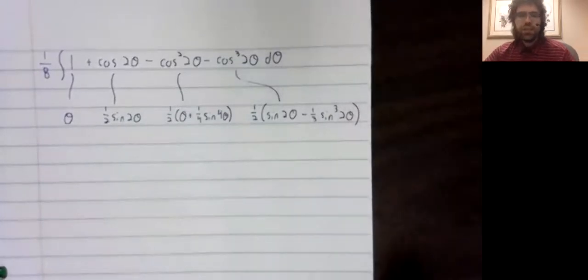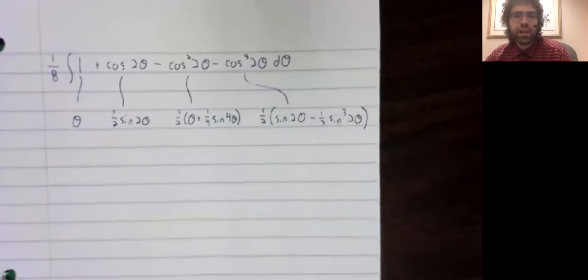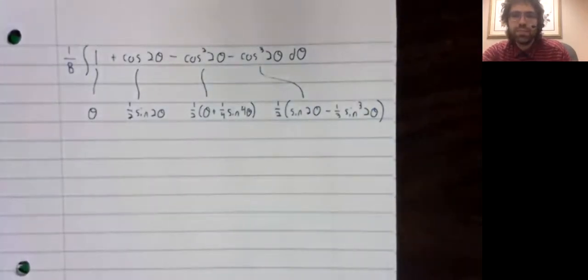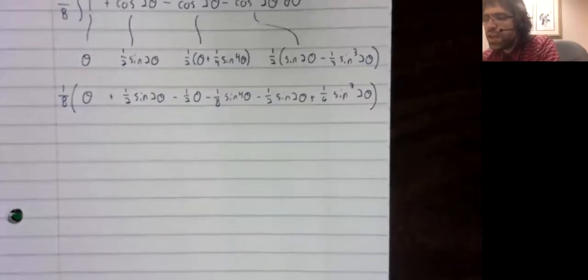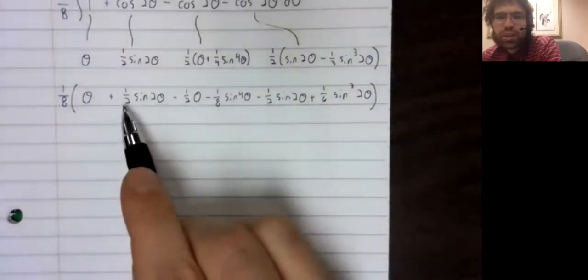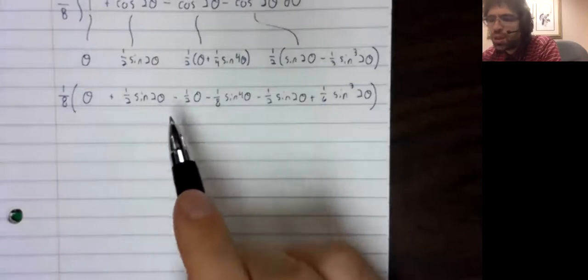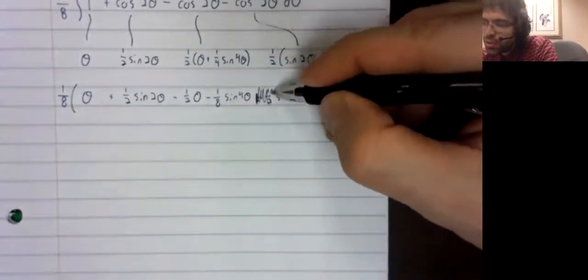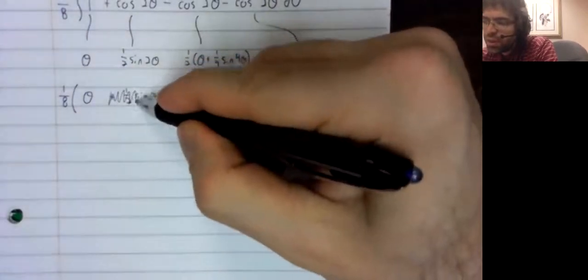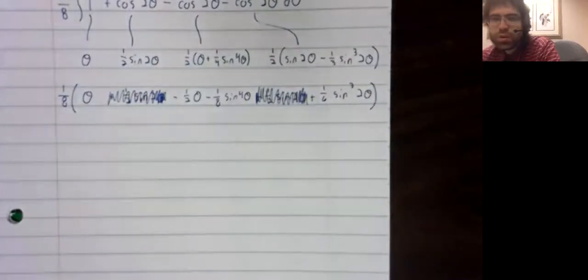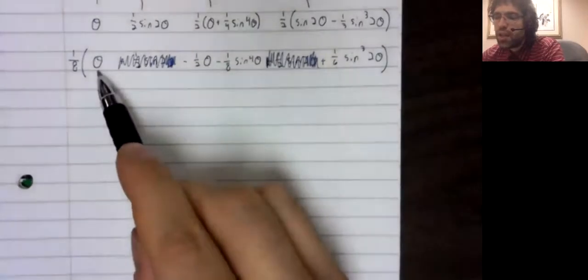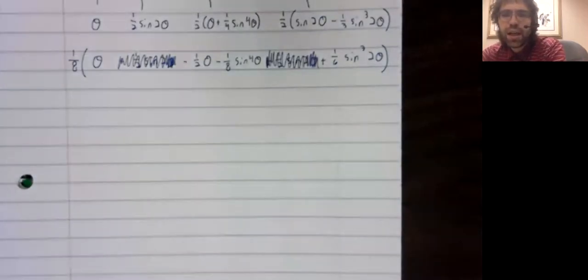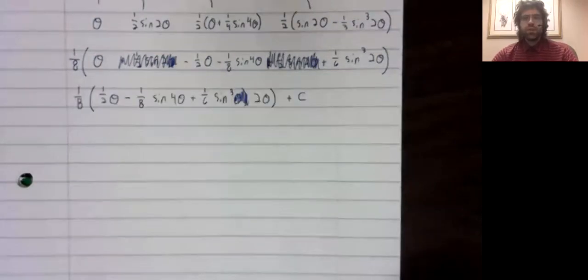Let me distribute everything except for this one eighth which I'm just going to let sit there. Some cancellation occurs. Most notably, we have a one half sine two theta and a negative one half sine two theta. So those completely eliminate each other. We also have a theta and a minus one half theta. So that gives us one half theta. So here's our final solution.